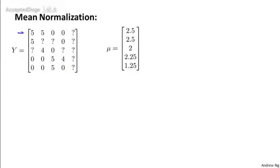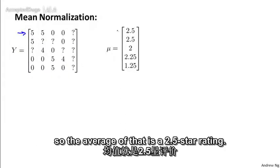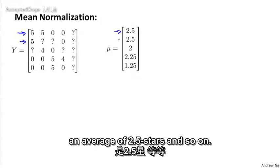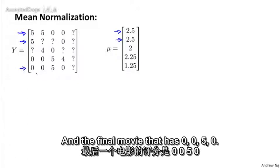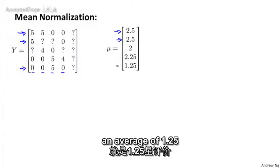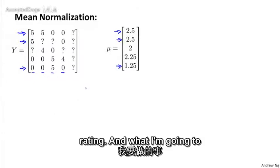And I'm going to store that in a vector that we call mu. So the first movie got two 5 star and two 0 star ratings, so the average of that is a 2.5 star rating. The second movie had an average of 2.5 stars, and so on. Then the final movie has 0, 0, 5, 0, and the average of those averages out to 1.25 rating.